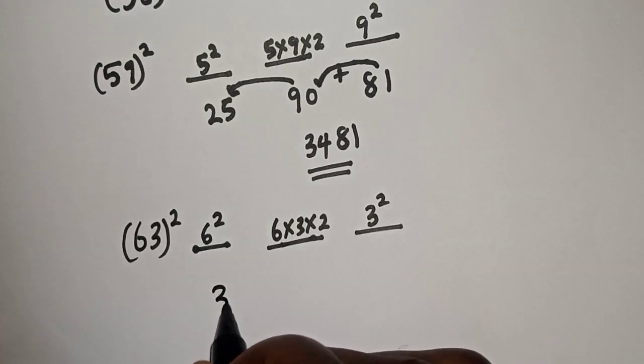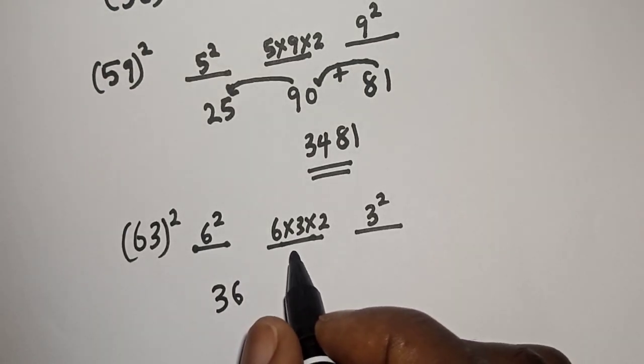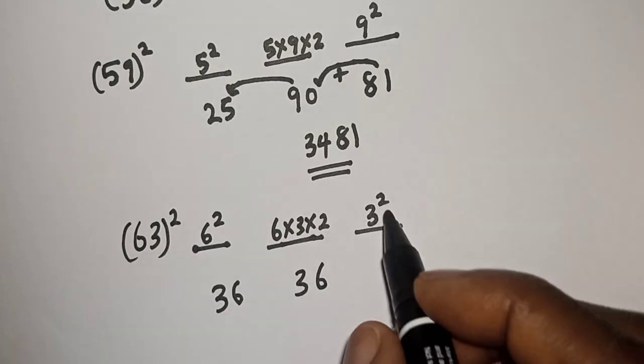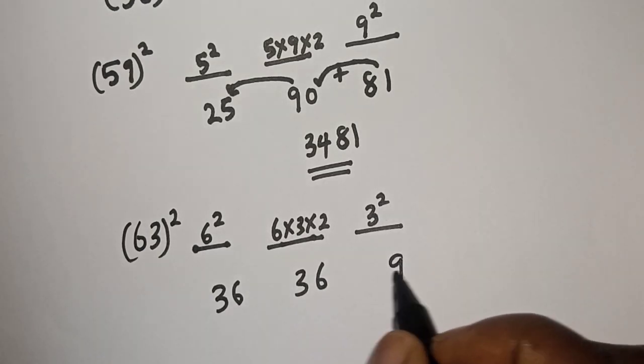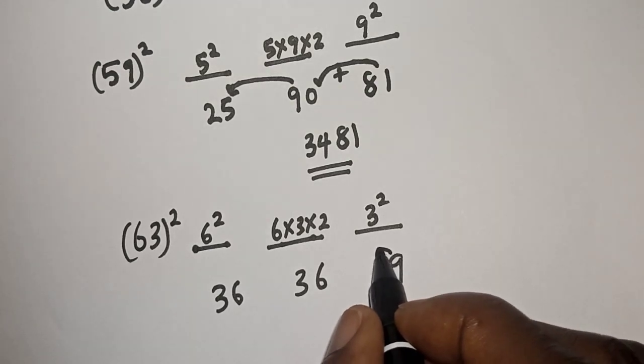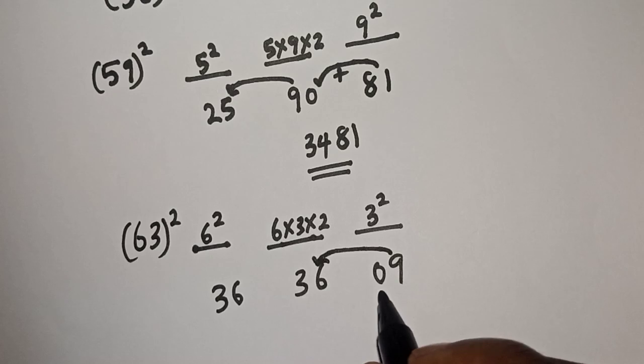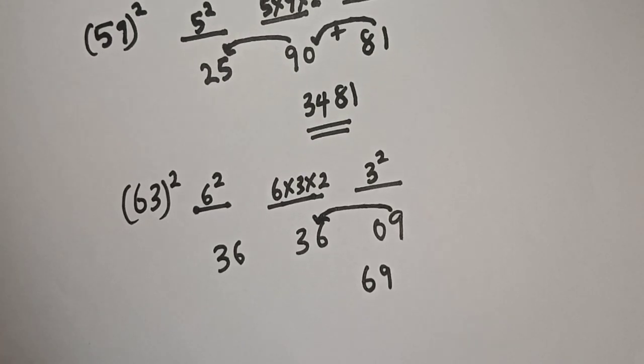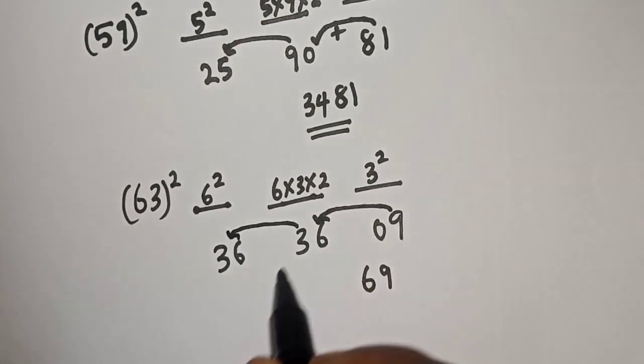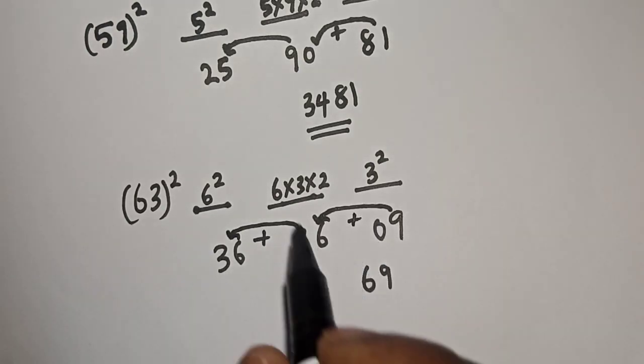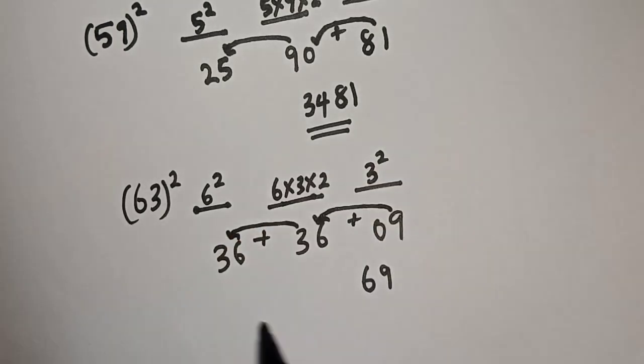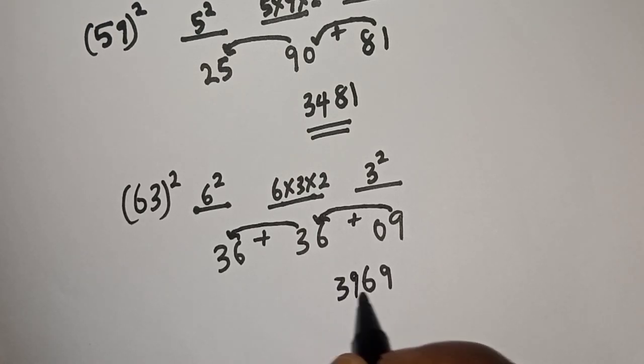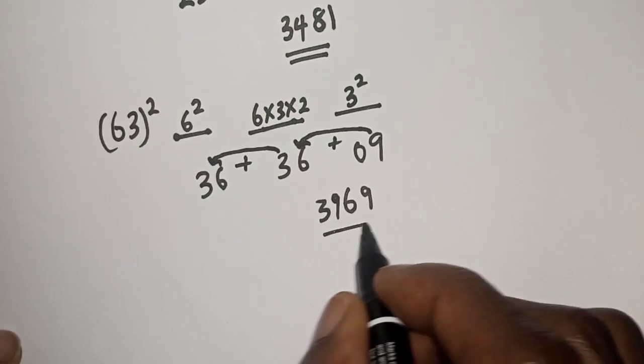And here 6 square that is 36, then 6 times 3 times 2 that is 36 also, but here is what, 3 square that is 9. We add zero here, so let's add this to this that is 69, and this to this. So this is 39 69.